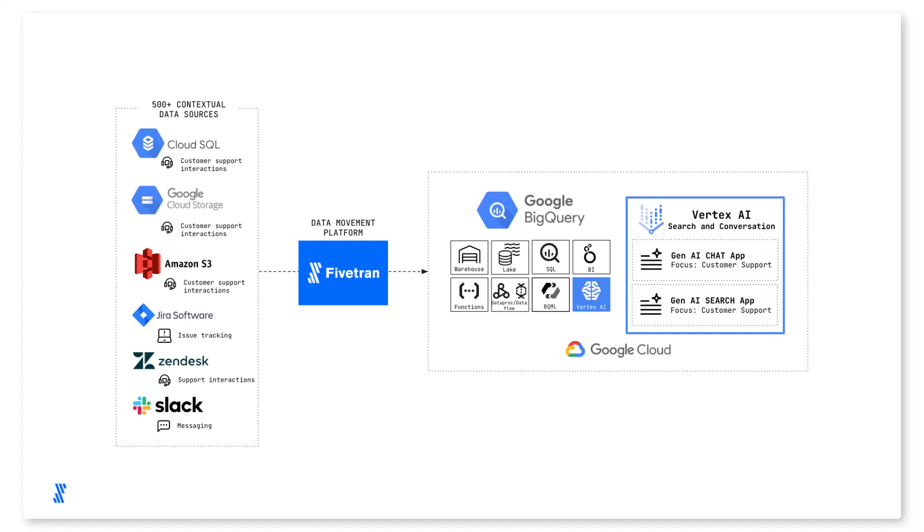Fivetran will move that data into Google BigQuery. I'll quickly prototype both a simple Gen AI search app and a chat app in Vertex AI from those data sets. In order to build those Gen AI apps, I need contextual, focused data specific to my organization, and that's where Fivetran's automated data platform comes in. Fivetran allows you to centralize data while modernizing your data infrastructure, achieving greater data self-service, and building differentiating data solutions like Gen AI apps.